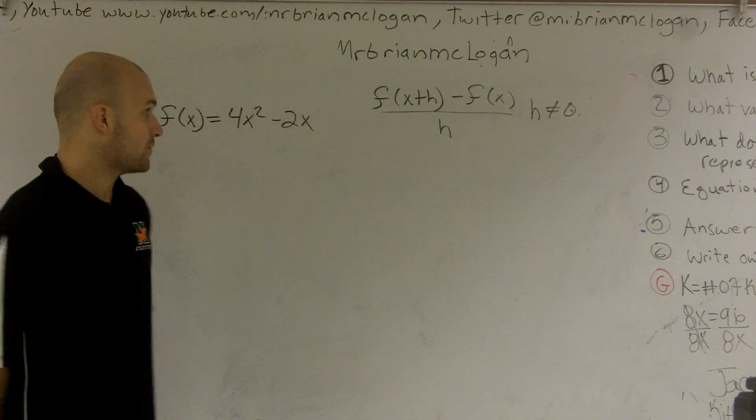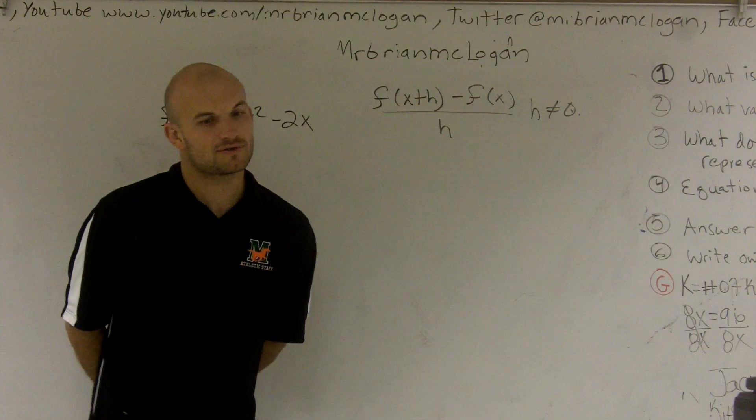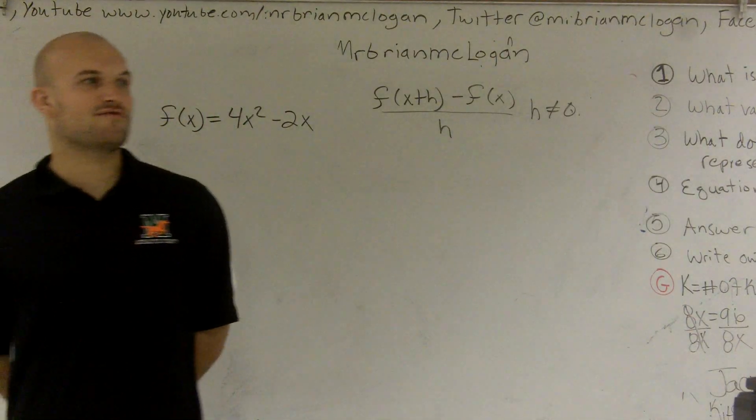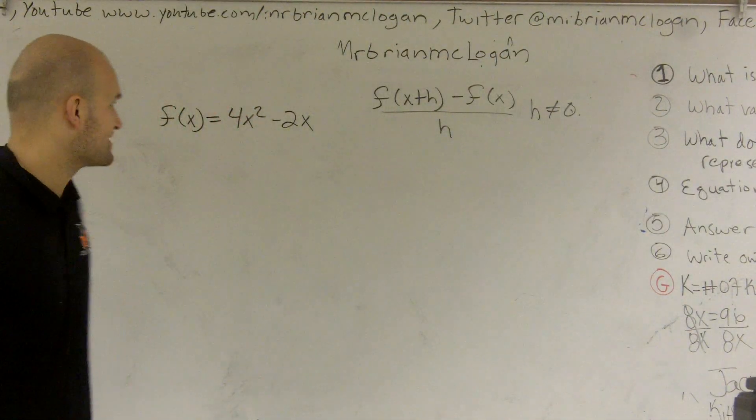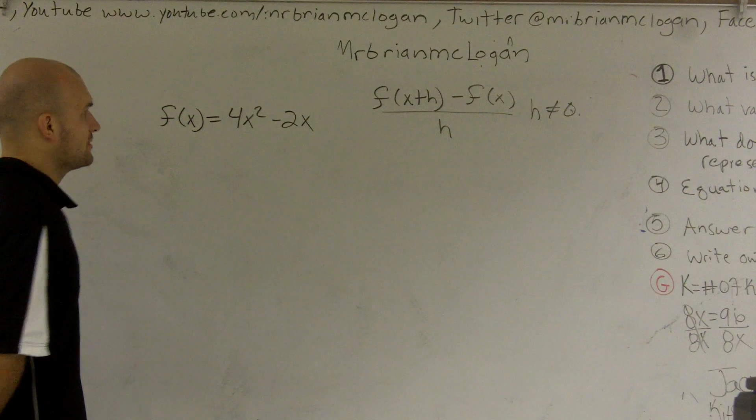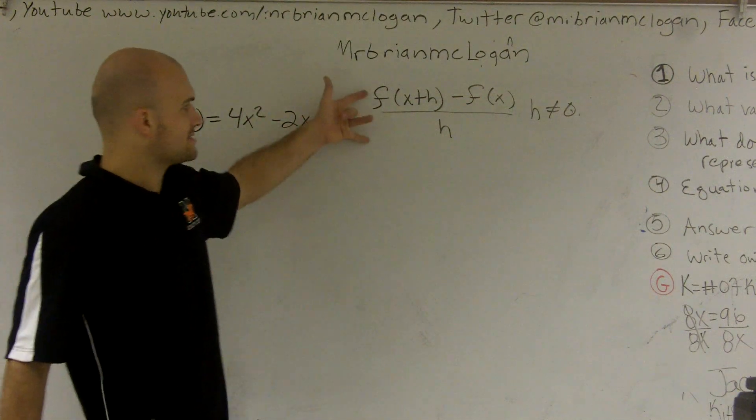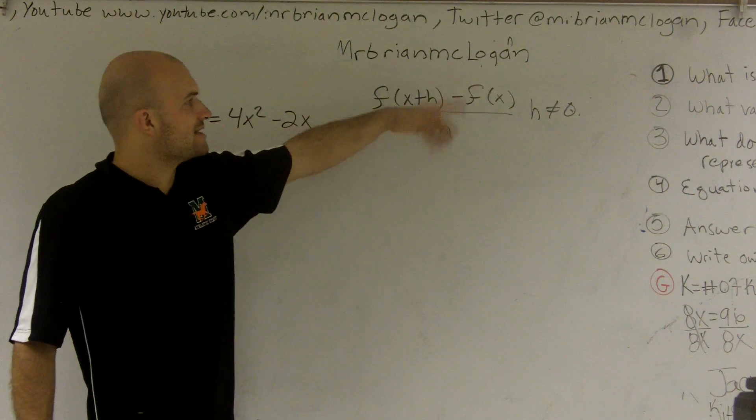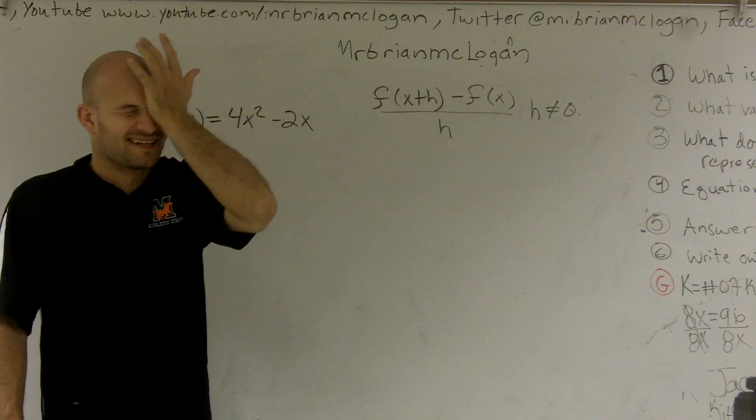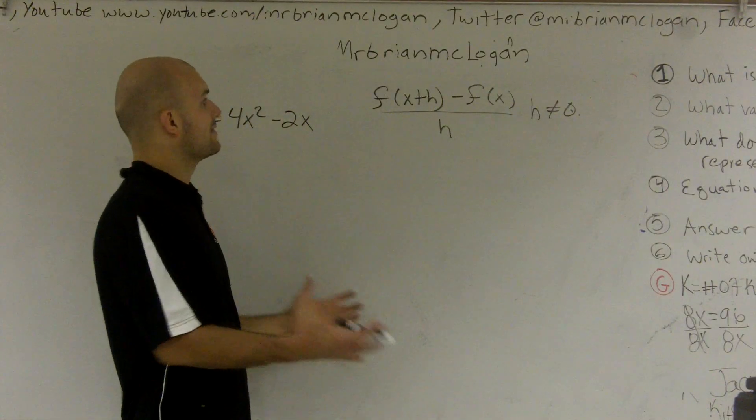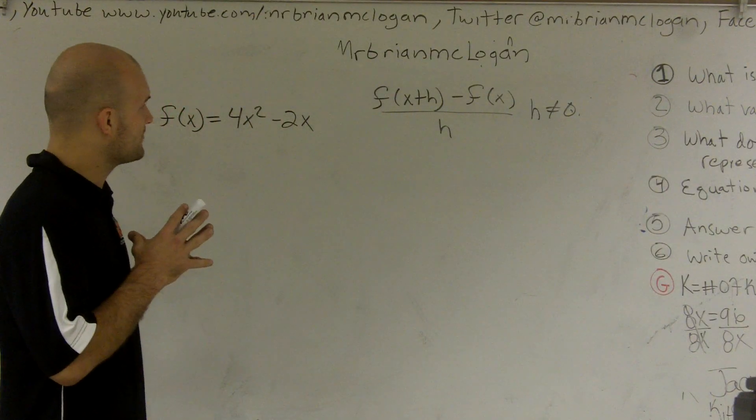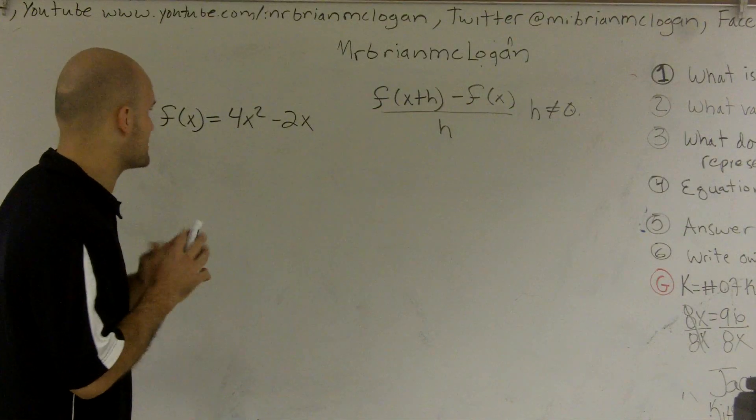Alright, so we're going to do the difference quotient. We're going to simplify the difference quotient. So rather than making this very confusing, I'm going to try to make this as simplistic as possible. We see this crazy stuff right here. f of (x+h) minus f(x) all over h. It's just like, why am I doing this? Why do I have to do this? Let's try to simplify this as much as possible.